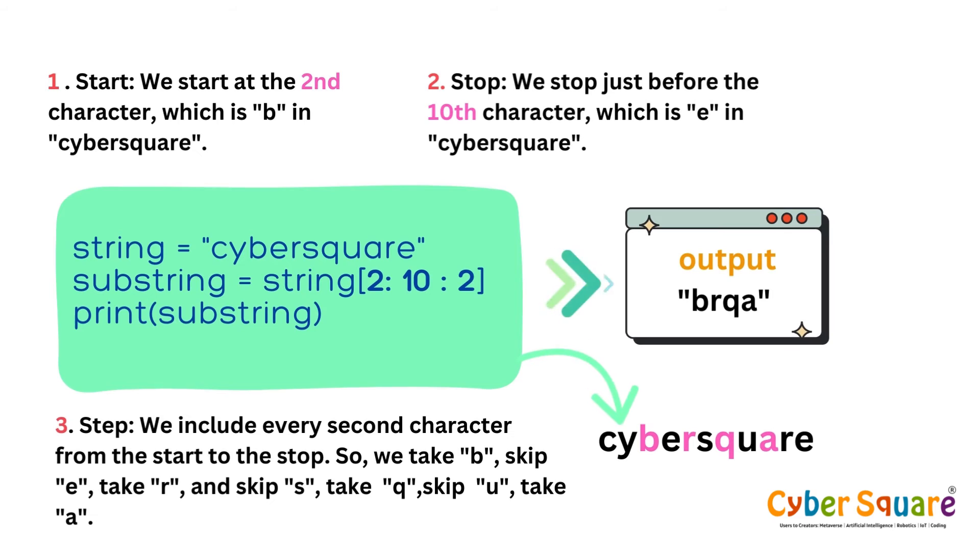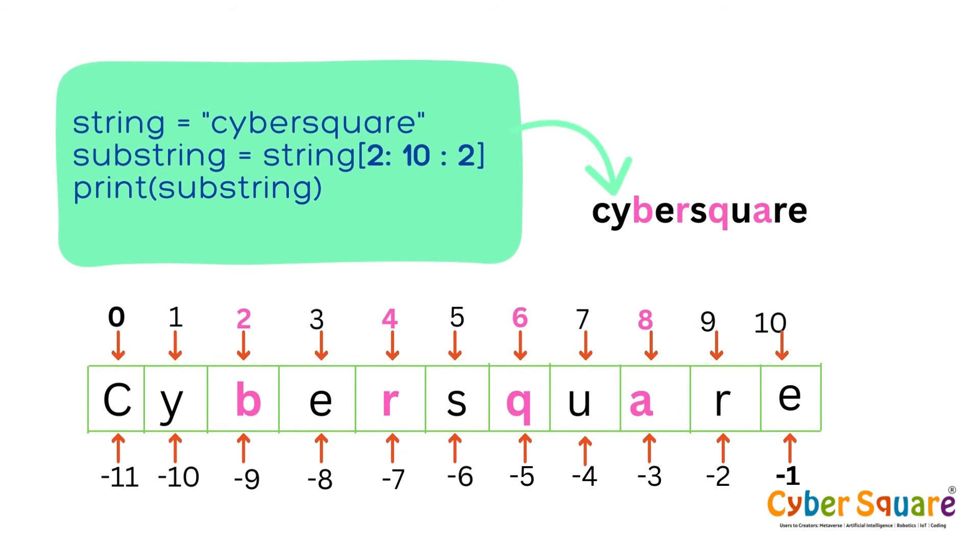Look at this example. We start at the second character, which is 'b' in 'cybersquare'. We stop just before the tenth character, which is 'e'. This means we include characters up to index 9. We include every second character from start to stop. So the output is b, r, q, a. Take a look at this—it'll give you a clearer understanding of the topic.